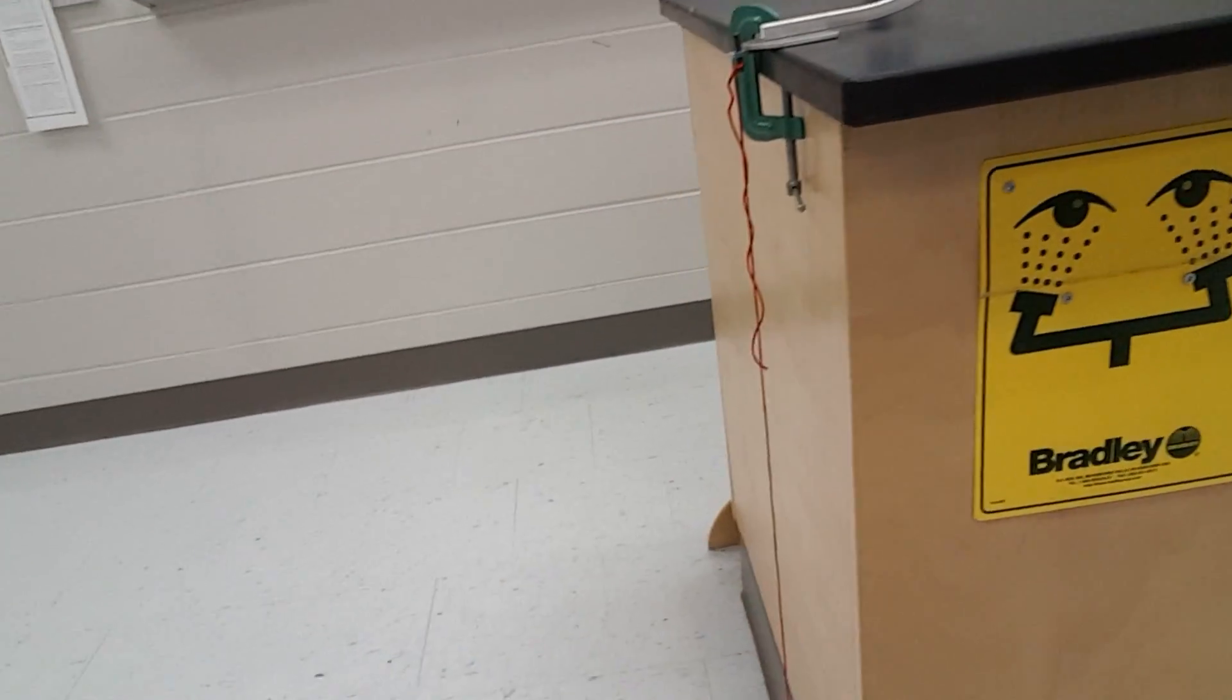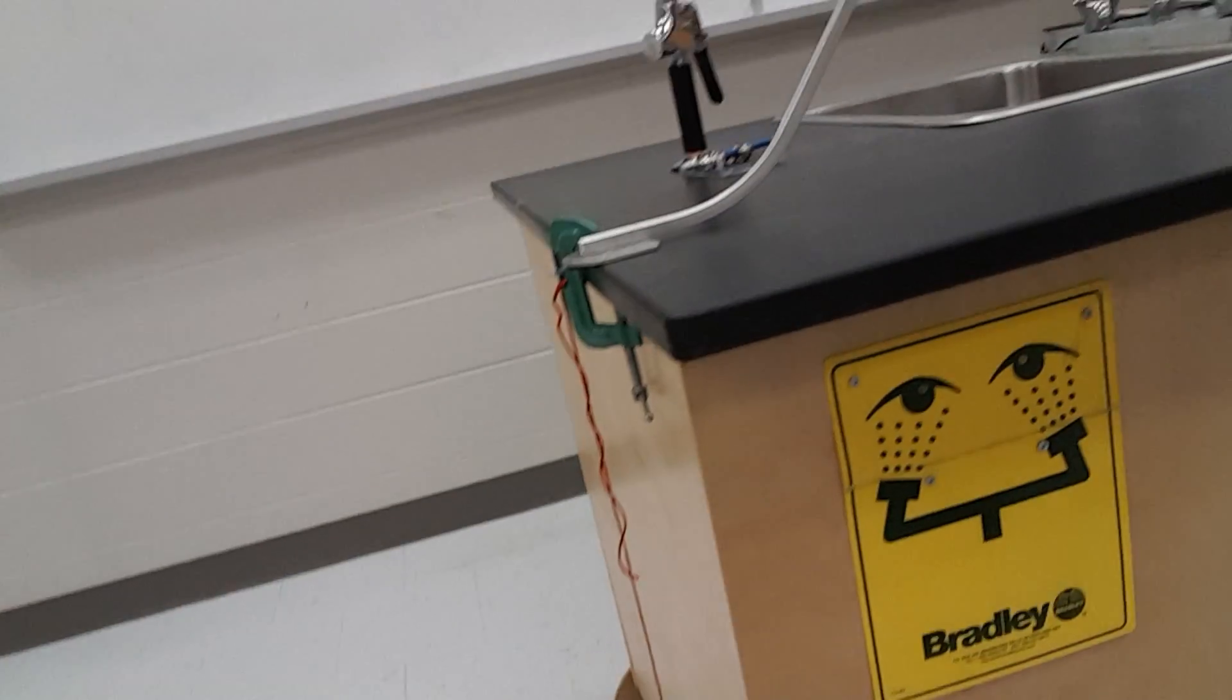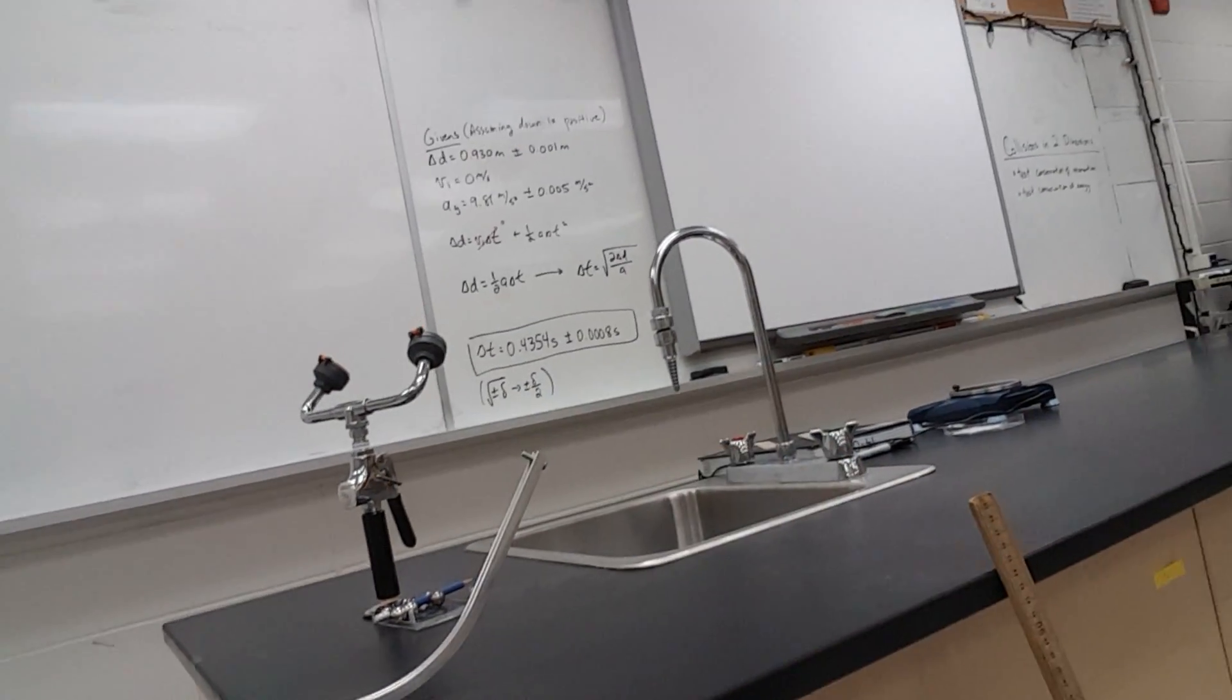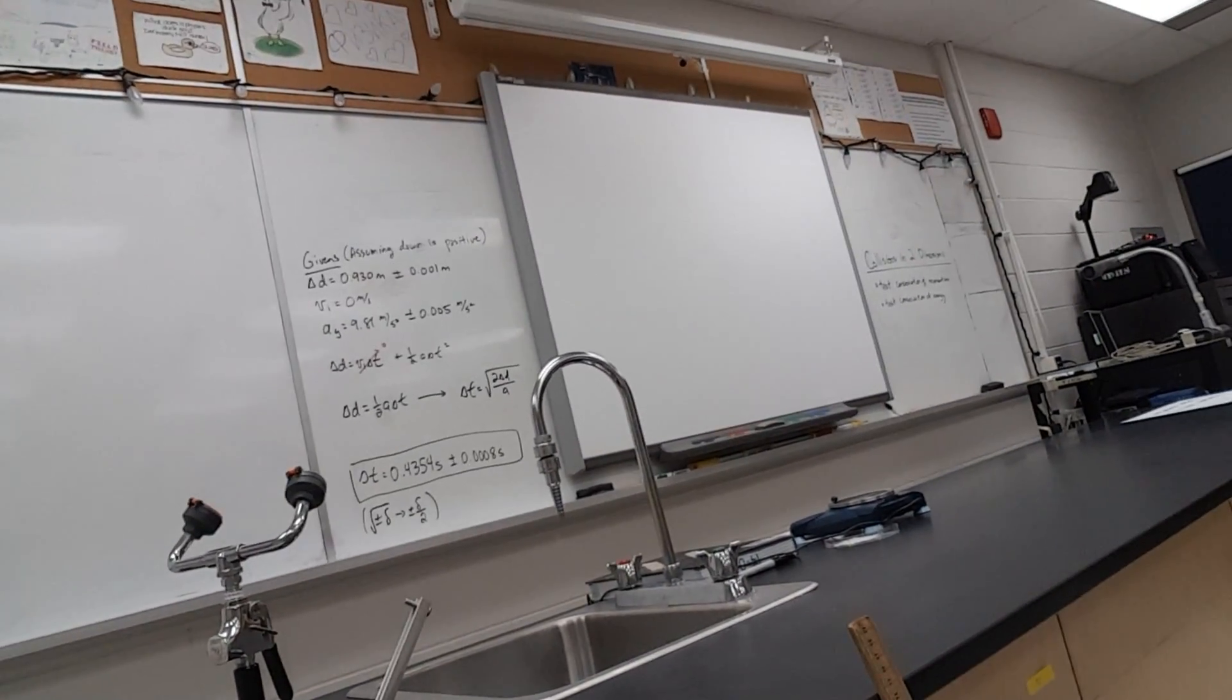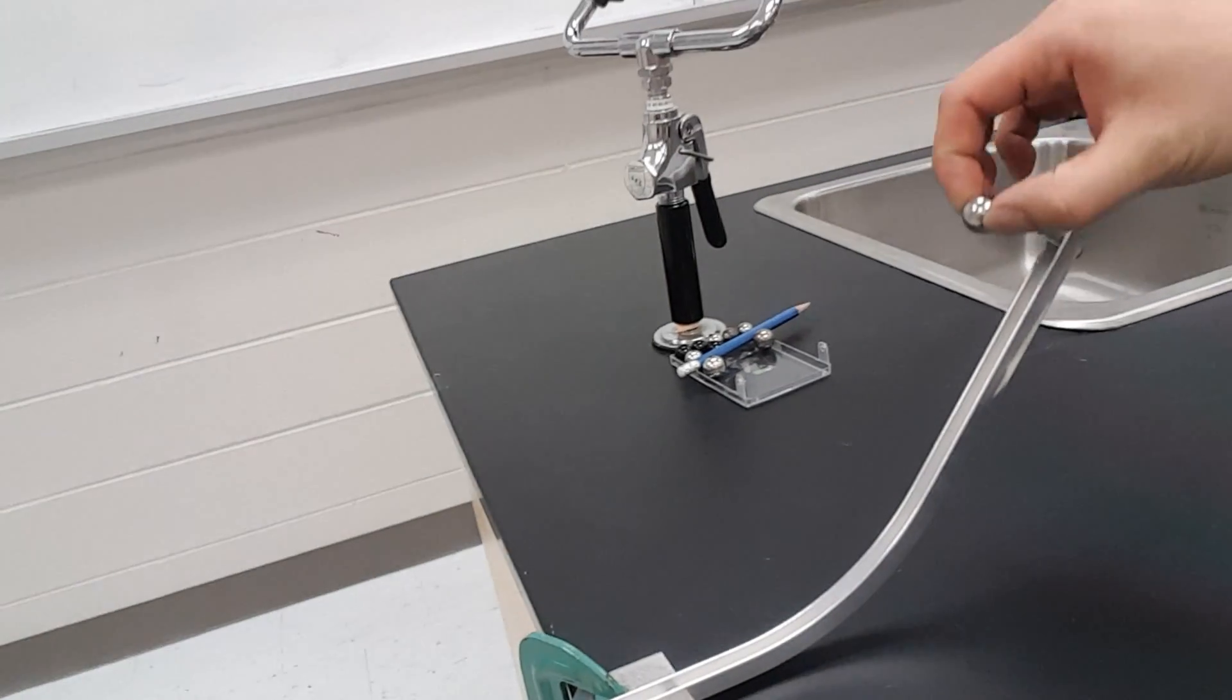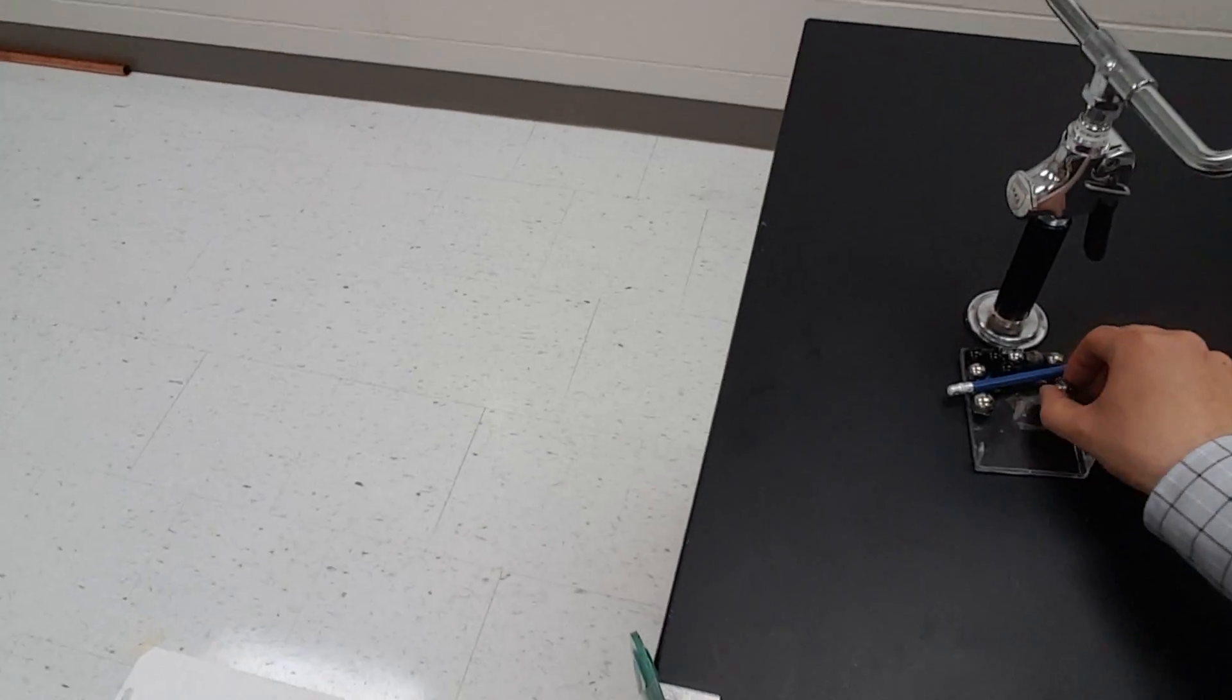So the next step is to figure out what the initial velocity is. For one, we know the time that it'll fall, 0.4354 seconds. So if we actually know the range that it drops, we can determine the initial velocity. The first thing you want to do is an initial drop to figure out approximately where to place the carbon paper. And after you've done that, you would repeat this five times.